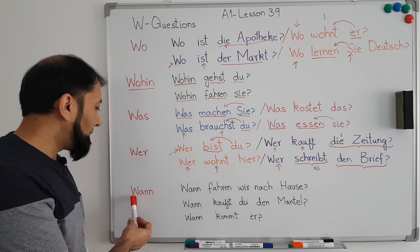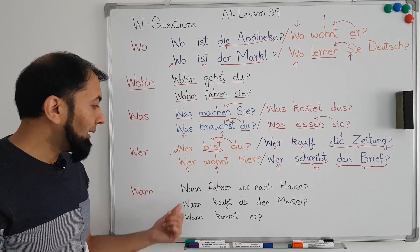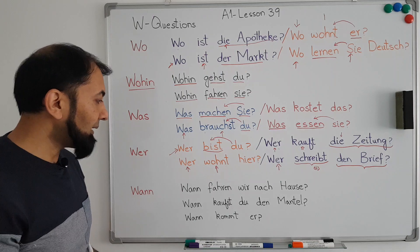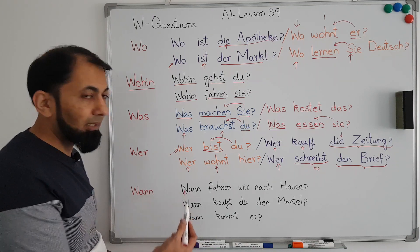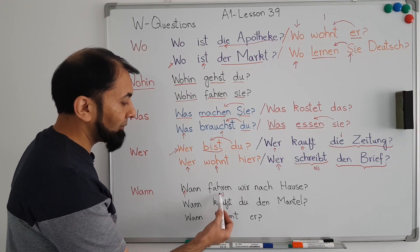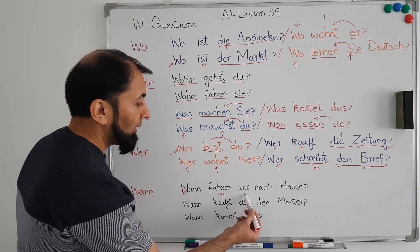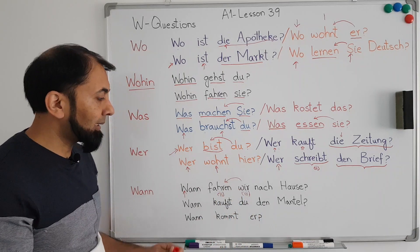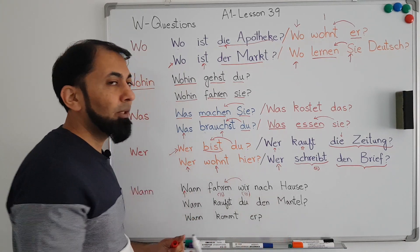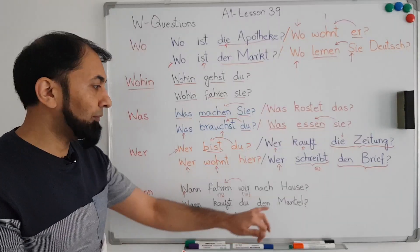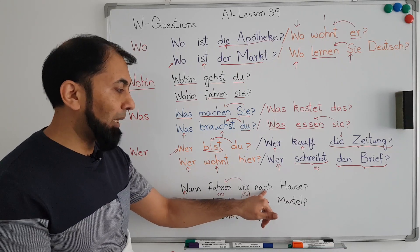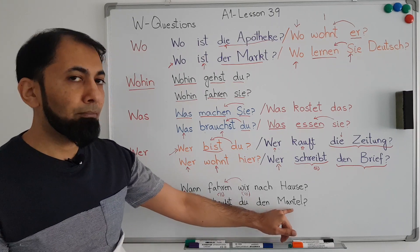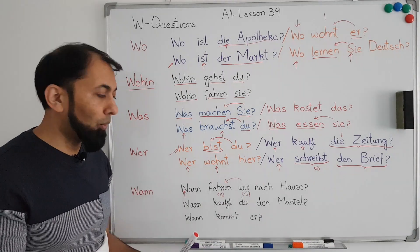The next W-question word is 'wann', which means 'when'. For example: 'Wann fahren wir nach Hause?' means 'When are we traveling home?' The W-question word is at the first position, then 'fahren' conjugated for 'wir' at the second position, and the subject 'wir' at the third. We have already learned that when traveling to home we use the preposition 'nach', which is a dative preposition.